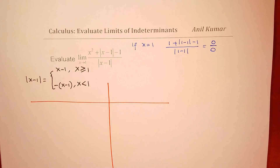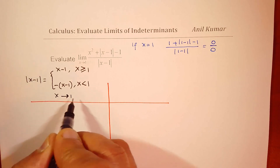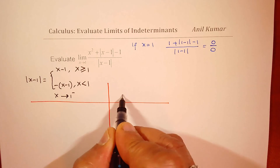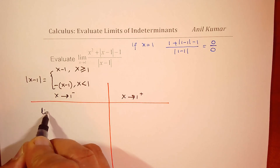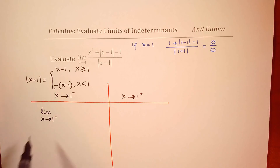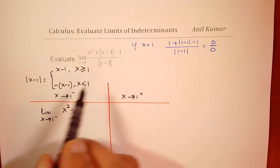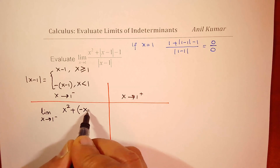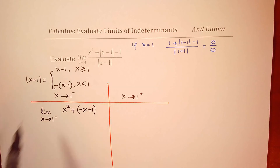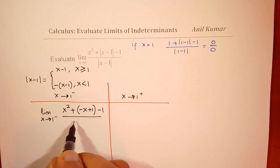We'll calculate the limit when x approaches 1 from the left side, and also the limit when x approaches 1 from the right side. For the left-hand limit, the absolute value of (x minus 1) becomes negative (x minus 1), which we write as negative x plus 1. So we open the bracket and have minus 1 in the numerator, and the denominator absolute value of (x minus 1) is written as negative x plus 1.